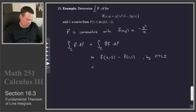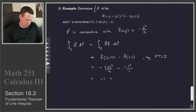So f at (4,-2): that's -(-2)²/4, minus f at (1,1): that's -(1)²/1. And so that is -1 + 1, or 0. So there's the value of our integral.